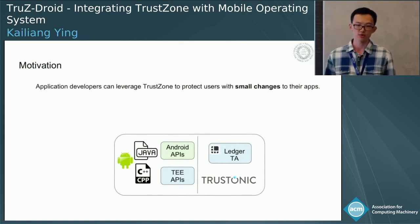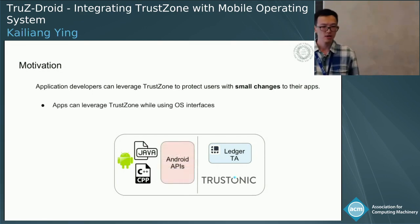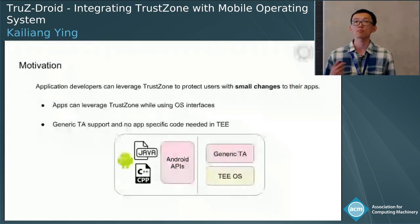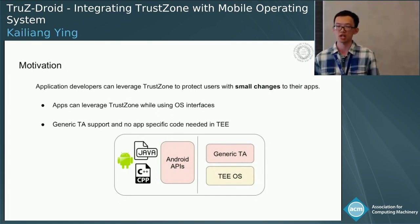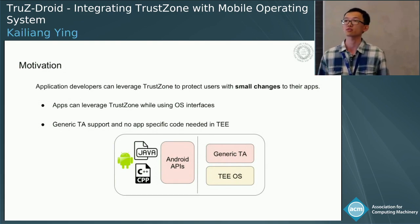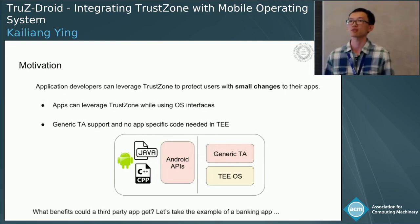We think that current application developers take too much effort to use TrustZone, and this is our motivation. We want to simplify this process so that application developers can leverage TrustZone to protect user use cases with small changes to the application. Small changes to us means: first, normal applications should use existing OS interfaces to leverage TrustZone; second, there should be no application-specific logic inside the secure world; and the TA which supports the normal world should be generic. The main reason is that app-specific logic broadens the attack surface, and we don't want that to happen in the secure world.